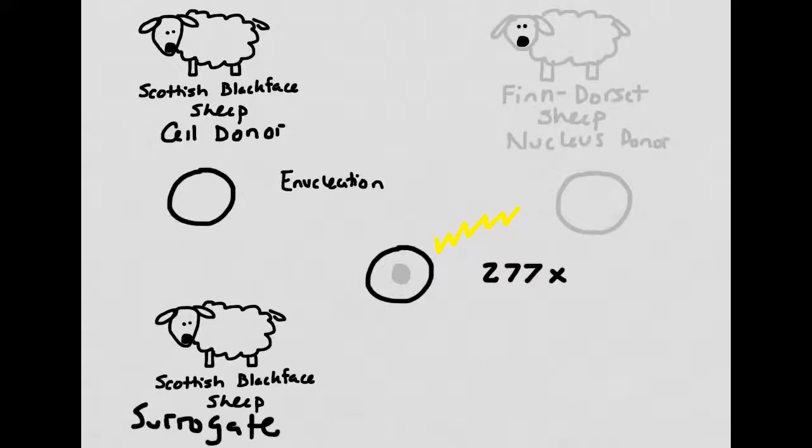Scientists then implanted whichever of the embryos survived beyond the first few cell divisions into surrogate Scottish blackface sheep. Remember that any sheep that develops from a cell that has this nucleus right here should be a white-faced sheep, but they were implanted into Scottish blackface sheep.